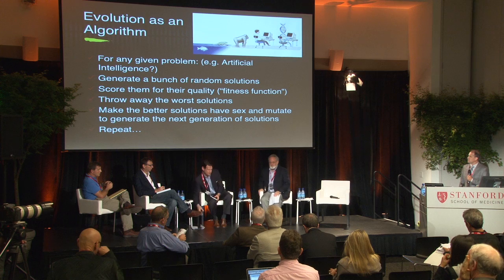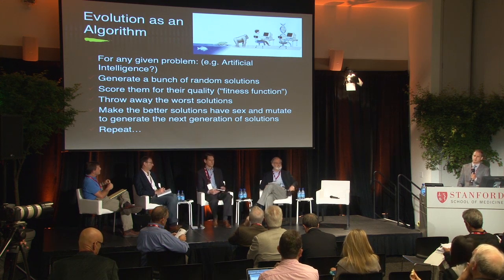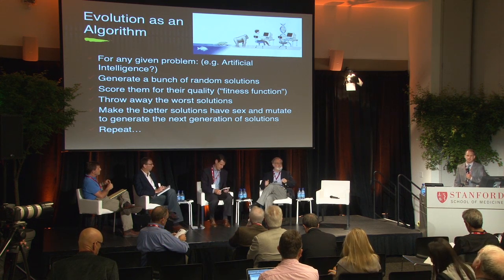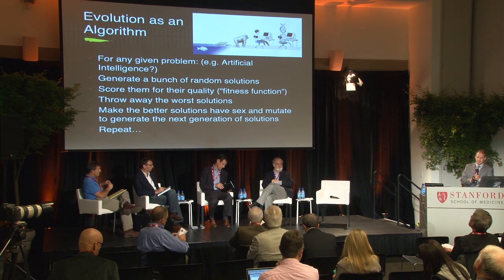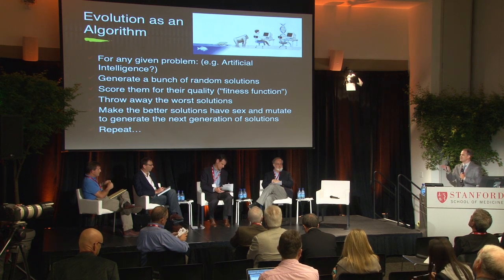Evolution is a kind of algorithm. You generate a bunch of possible solutions to your problem. They have some scoring — what we call the fitness function in genetic algorithms. You throw away the worst solutions, make the better solutions have sex, mutate them, and try it again, and you get solutions to your problems. It struck me that evolution is the only algorithm that's ever produced intelligence, so my interest in artificial intelligence veered towards evolution.